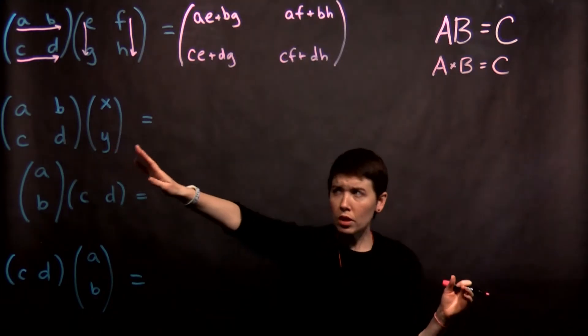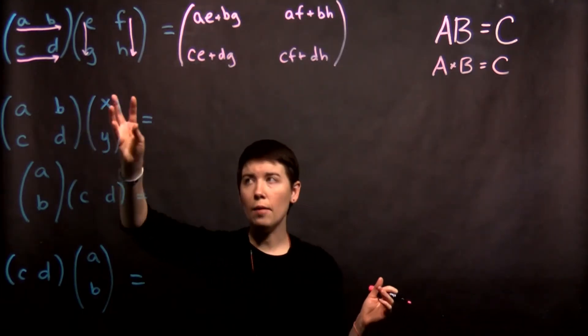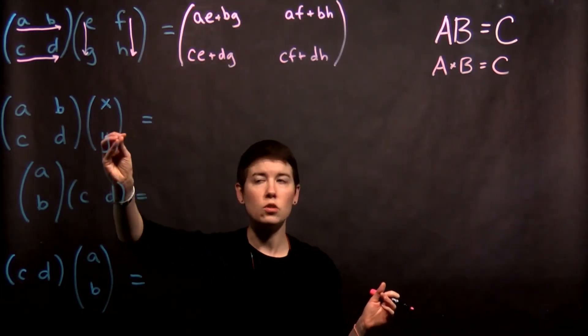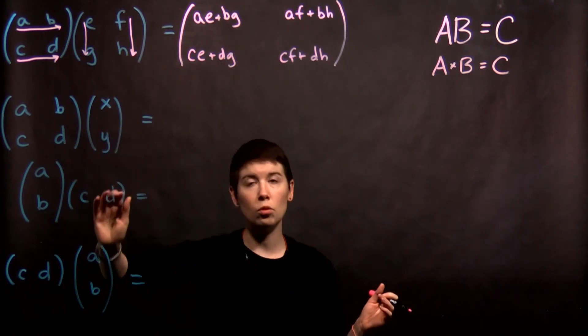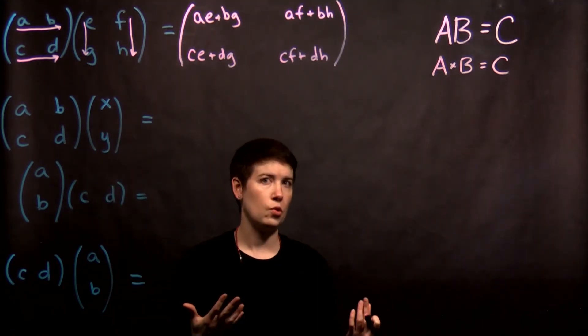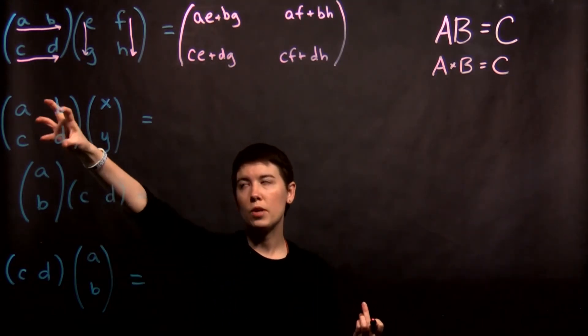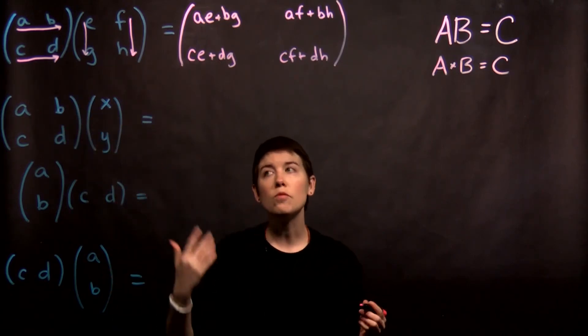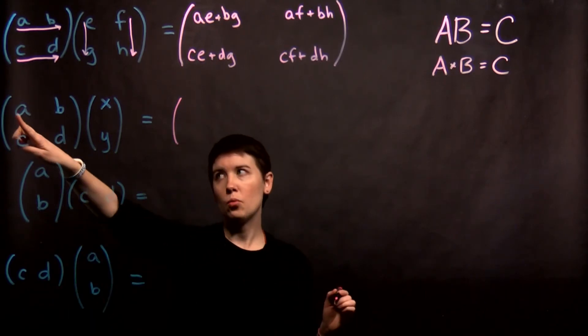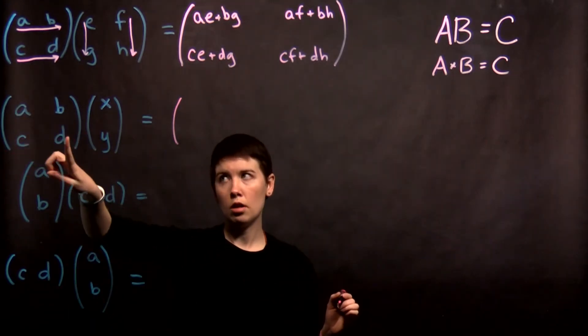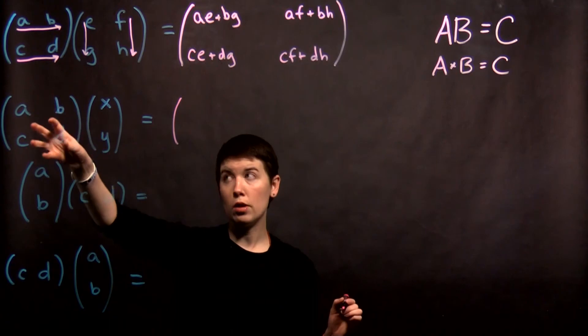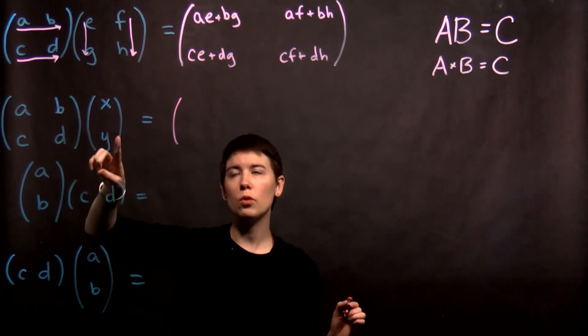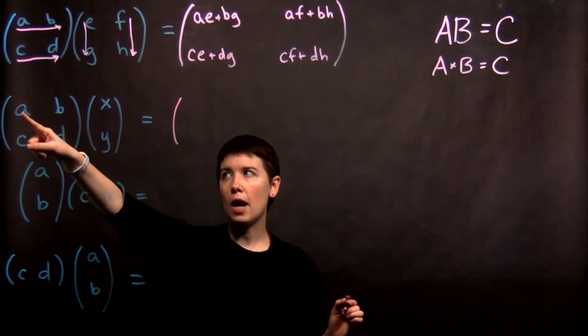So now if we look at this situation, I'm going to call these sorts of objects, where it either has one column or one row, as vectors. And so in this case we have a matrix multiplied by a vector. We can follow the same rules. So in this case we have two rows in this first matrix, but then only one column. So let's see what happens.